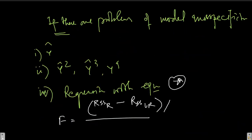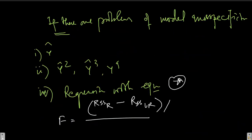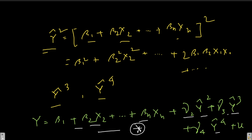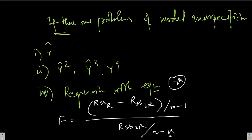If there are m independent variables in the model including the intercept, the numerator degrees of freedom is m minus 1. The denominator uses the RSS of the unrestricted model divided by n minus the number of variables in the unrestricted model, since we are including the additional squared, cubed, and fourth-power ŷ terms.